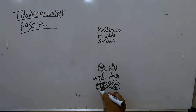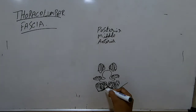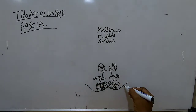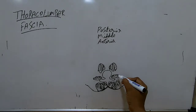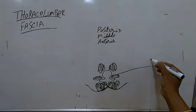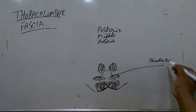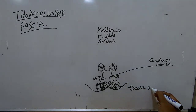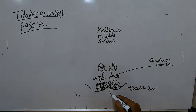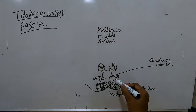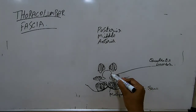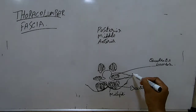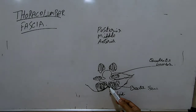The posterior layer of the thoracolumbar fascia covers the erector spinae. The middle layer is between the quadratus lumborum and the erector spinae, with multifidae also present. The posterior layer is the thickest - it starts from the spinous process, covers the erector spinae muscle group, and goes anteriorly.